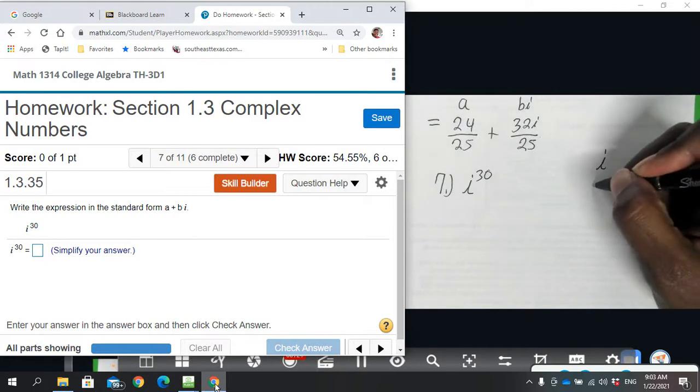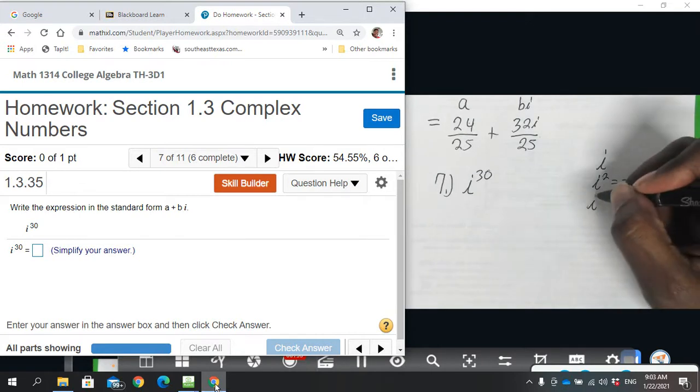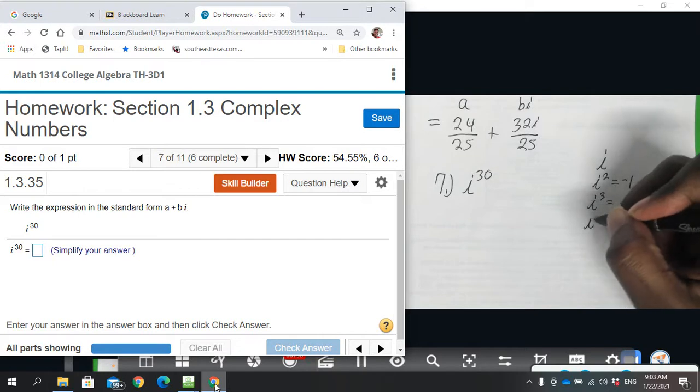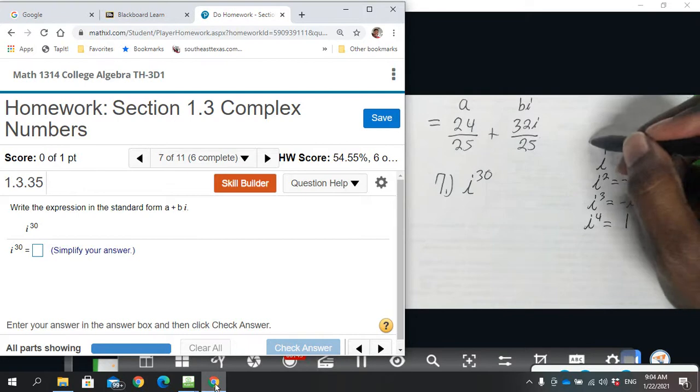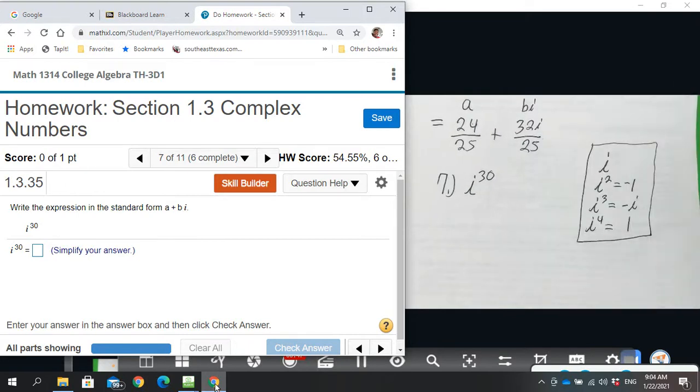i cubed which is equal to negative i, and then we have i to the fourth which is equal to positive one. So this is your scale. All right, so we're going to do some division and we're going to look at our remainder.